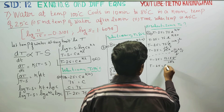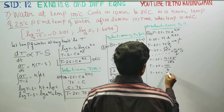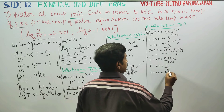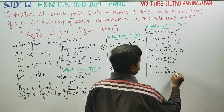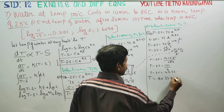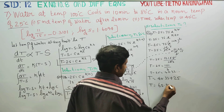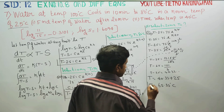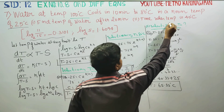Simplifying: T minus 25 equals 121 by 3, which is approximately 40.33. Therefore T equals 40.33 plus 25, giving T equals 65.33 degree Celsius. This is the temperature of the water when time is 20 minutes.